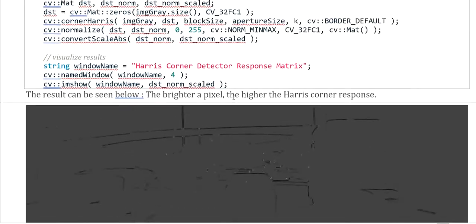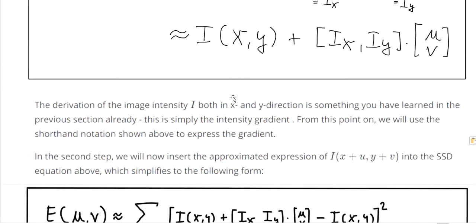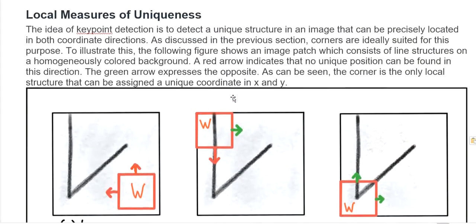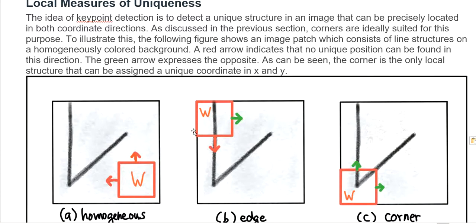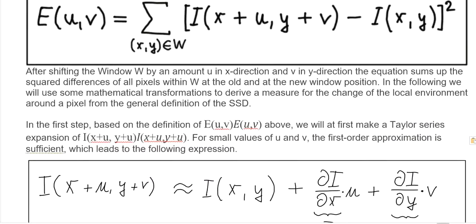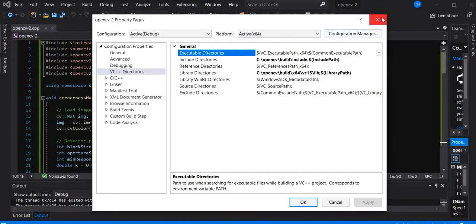That is the Harris corner detector. I hope you understand how to apply the Harris corner detector in this session — specifically how to locate key point detections as unique structures in the image that can be precisely located in the coordinate system. We continue to show how we apply the corner Harris detector in C++ code using OpenCV. As in the last video, you know how to create a new project and add OpenCV to the project.